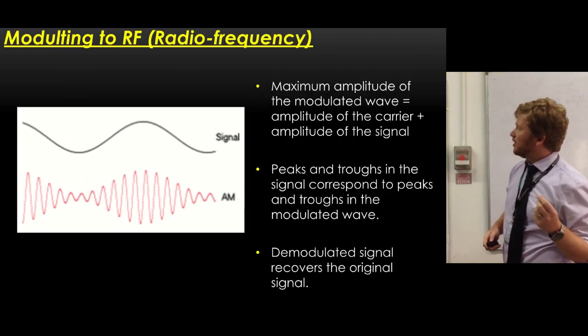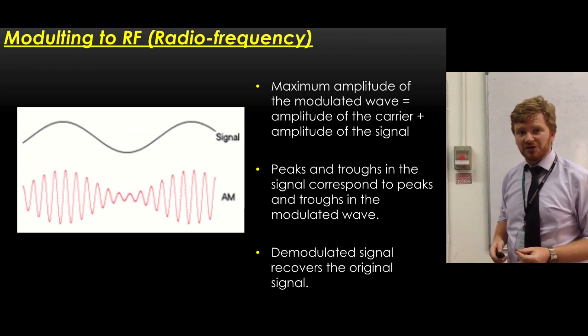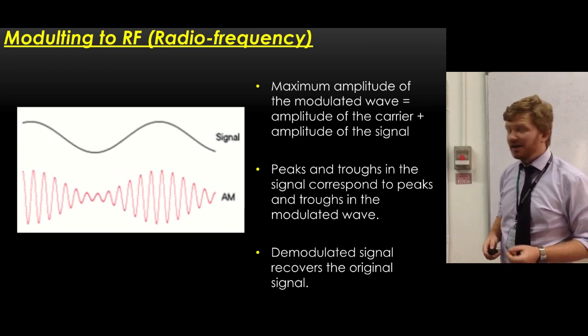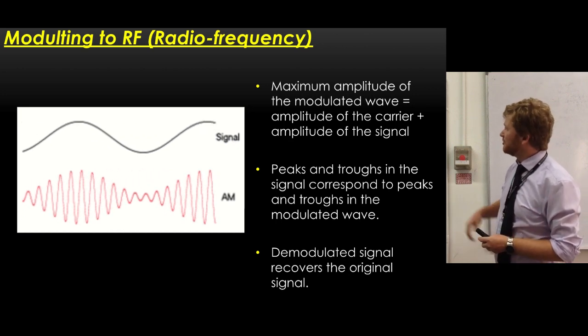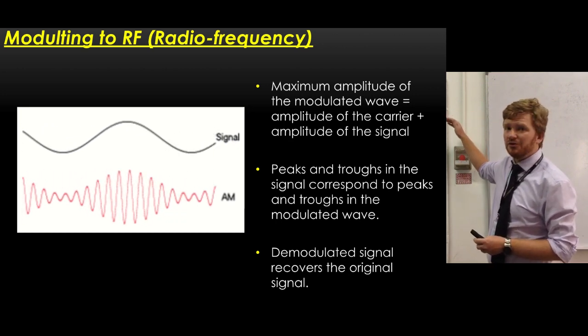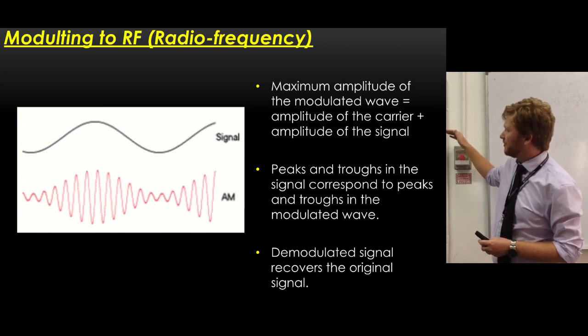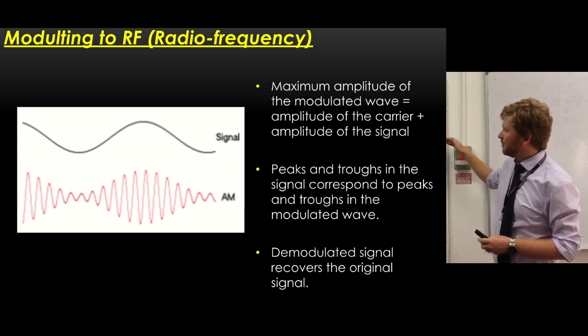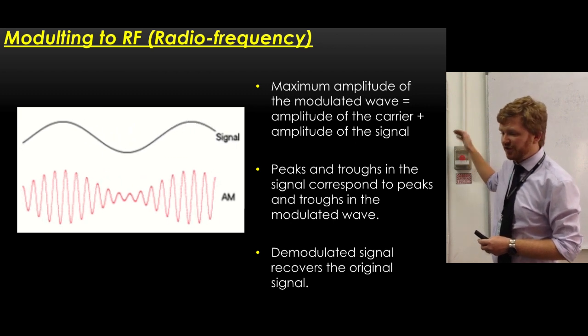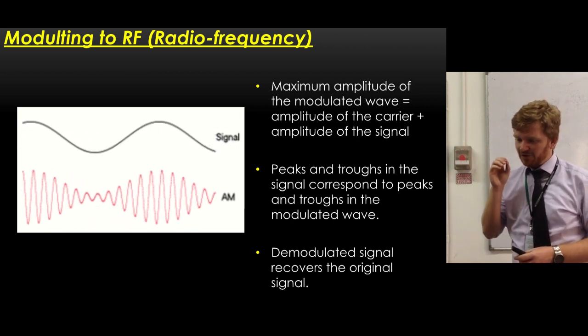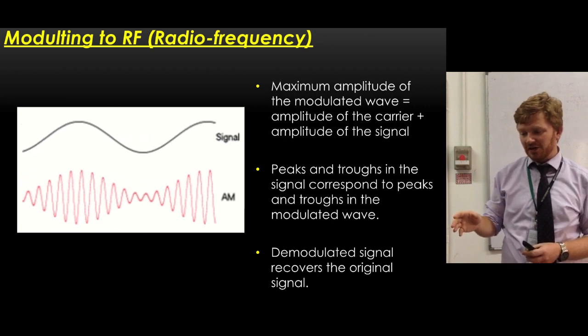So this is the simplest form of modulation that you can see here. This is amplitude modulation. And in amplitude modulation, you can see that the maximum amplitude of the modulated wave is equal to the amplitude of the carrier wave plus the amplitude of the signal wave. So watch that as it goes past. You can see it just coming past the screen. Now we've got a peak in our signal.